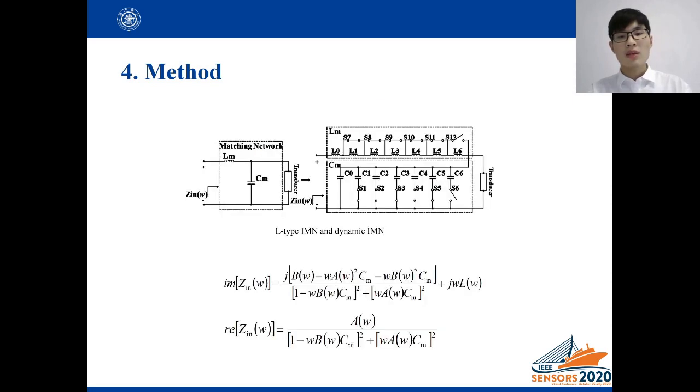This slide shows the L-type impedance matching network and dynamic impedance matching network. Dynamic impedance matching network divides LM and CM in L-type impedance matching network into several small units, and each unit is controlled by a switch.